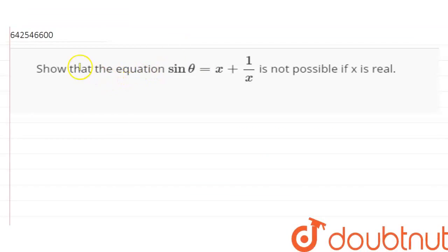We have to show that the equation sin θ = x + 1/x is not possible if x is real. And what does your real number comprise of? It comprises of basically all your rational and irrational numbers.